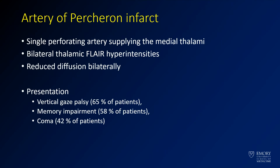In this case, what we're dealing with is an Artery of Percheron infarct. When you have an Artery of Percheron infarct, you get occlusion of the Artery of Percheron, which is a variant in which a single perforating artery supplies both thalami. What you'll see is infarcts in the medial thalamus bilaterally. Patients tend to get gaze palsy, memory impairments, and many can actually be in comas.